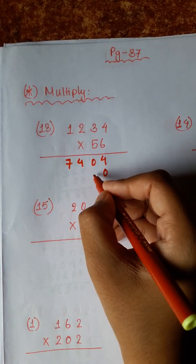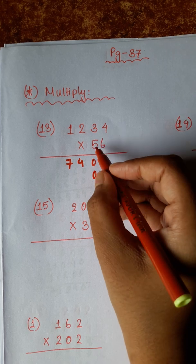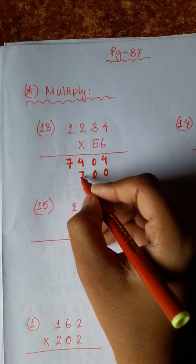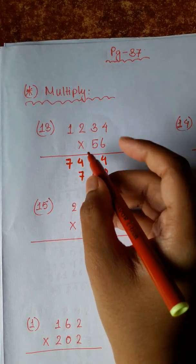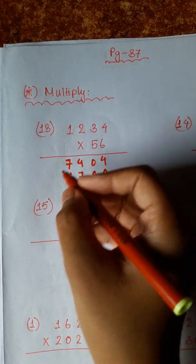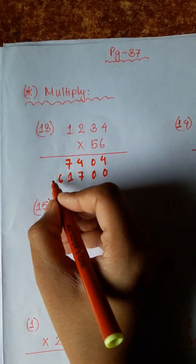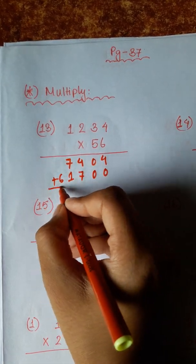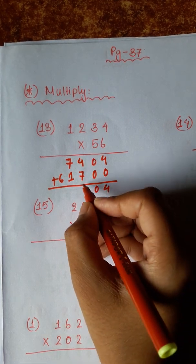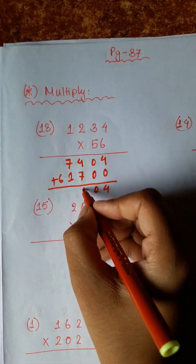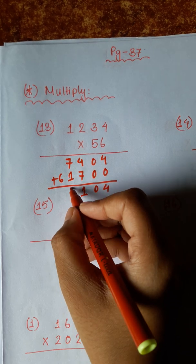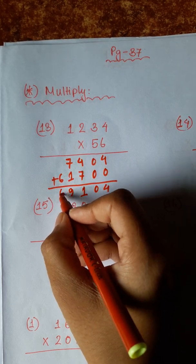5 fours are 20. 2, 5 threes are 15 plus 2 is 17, carry 1. 5 twos are 10 plus 1 is 11, carry 1. 5 ones are 5 plus 1 is 6. 6, 6, 4, 7 plus 4 is 11, carry 1. 1 plus 1 is 2, 7 plus 2 is 9. Result: 96.